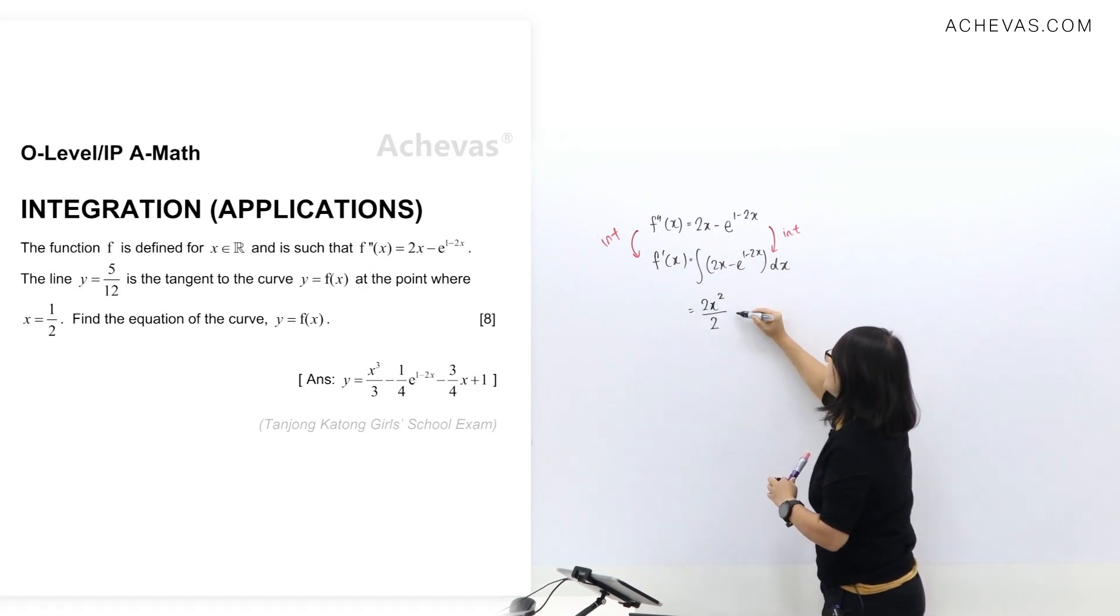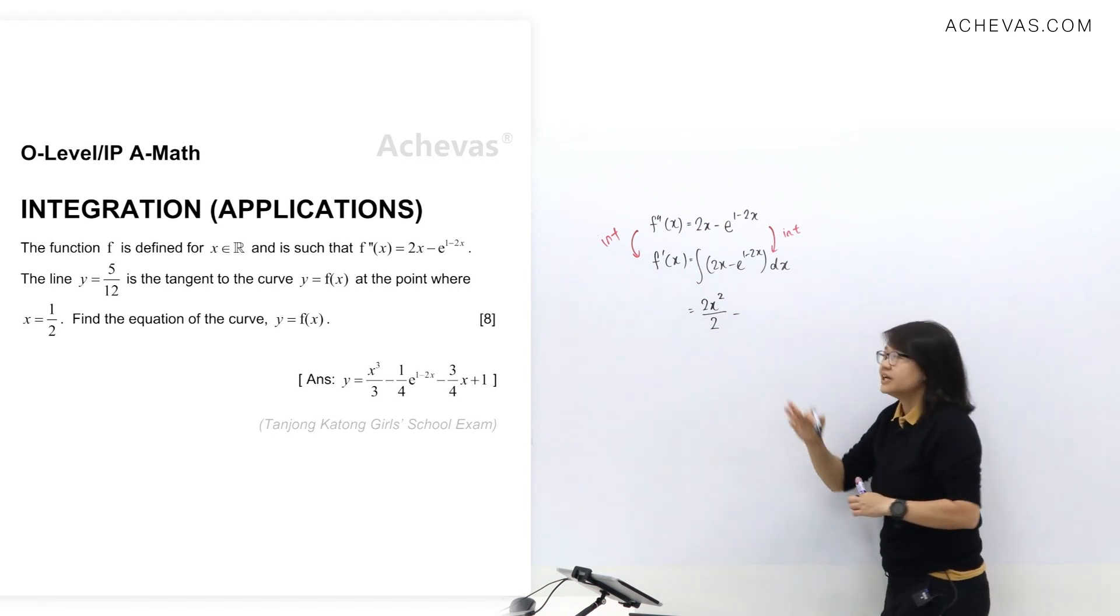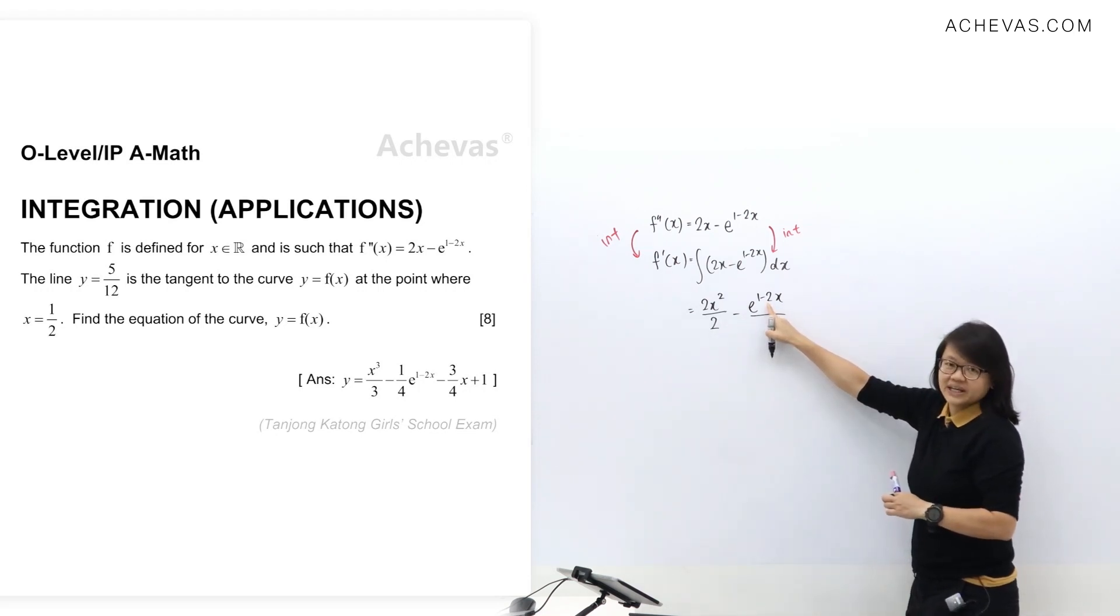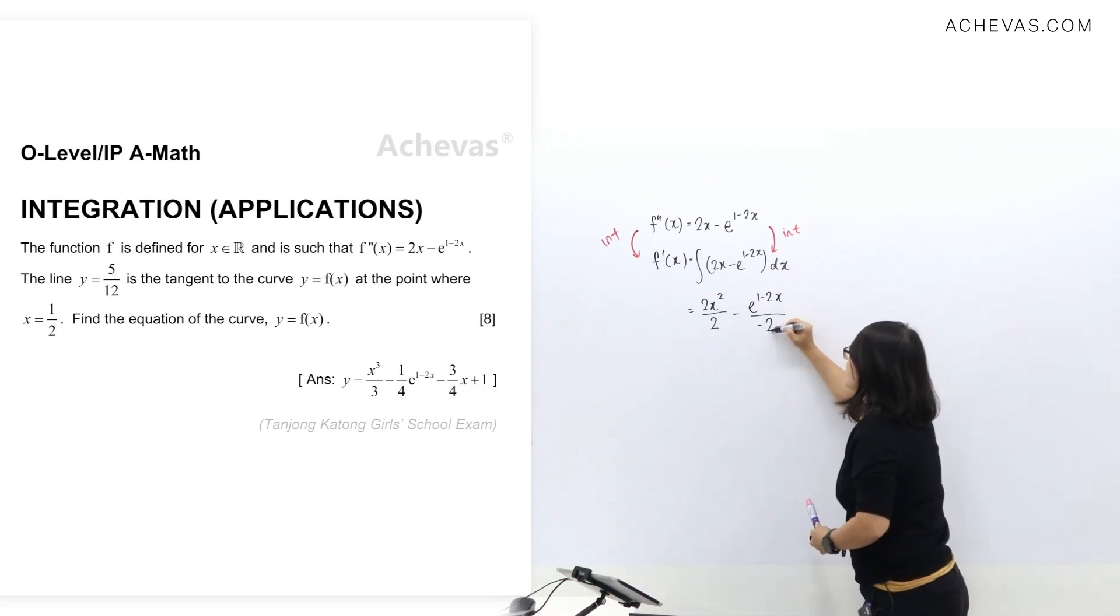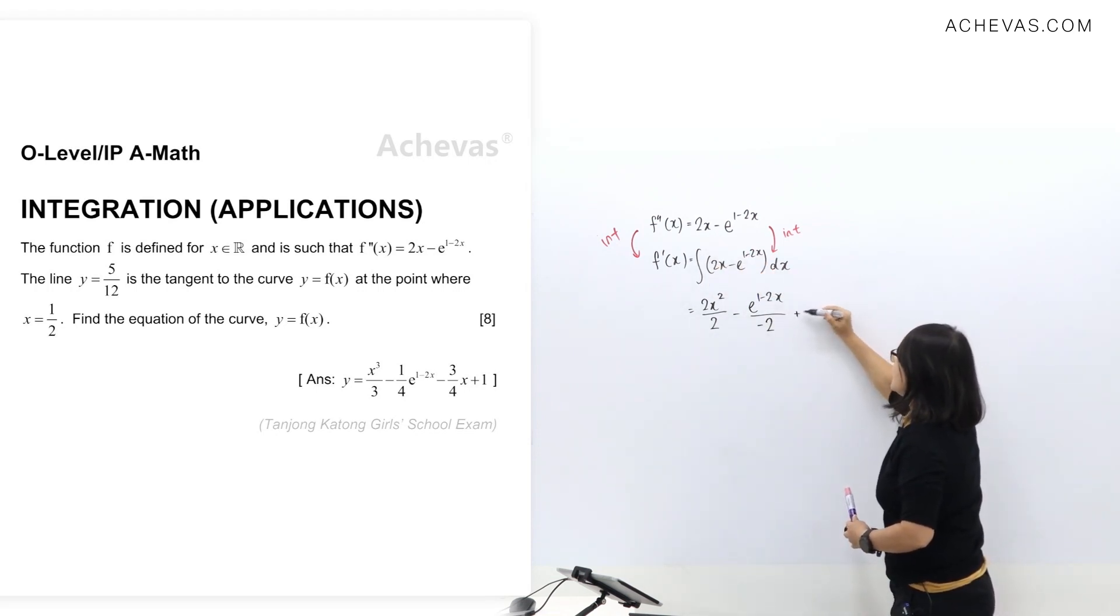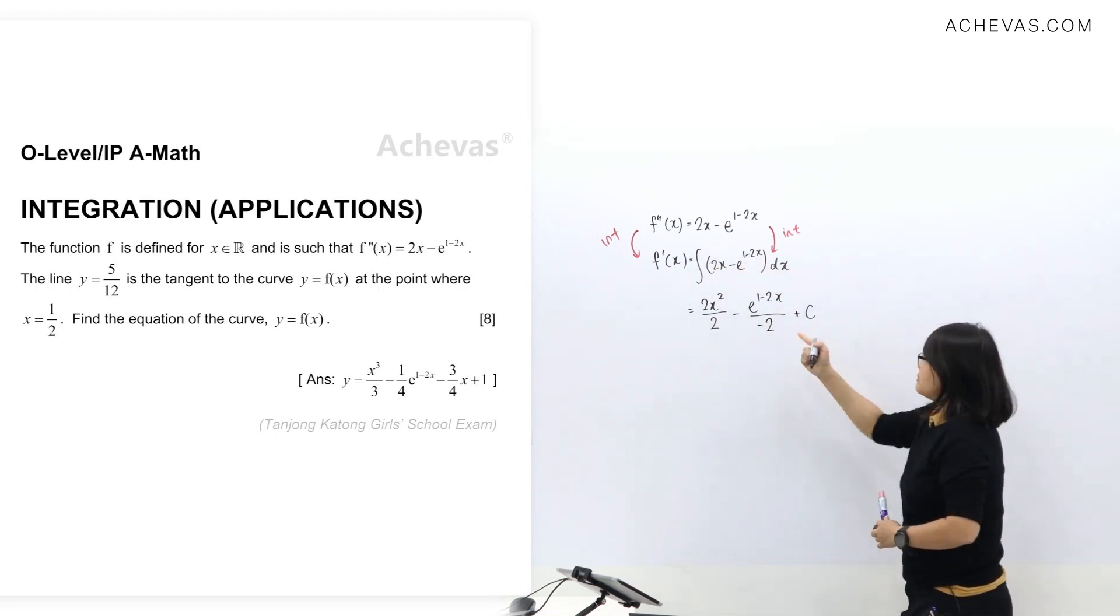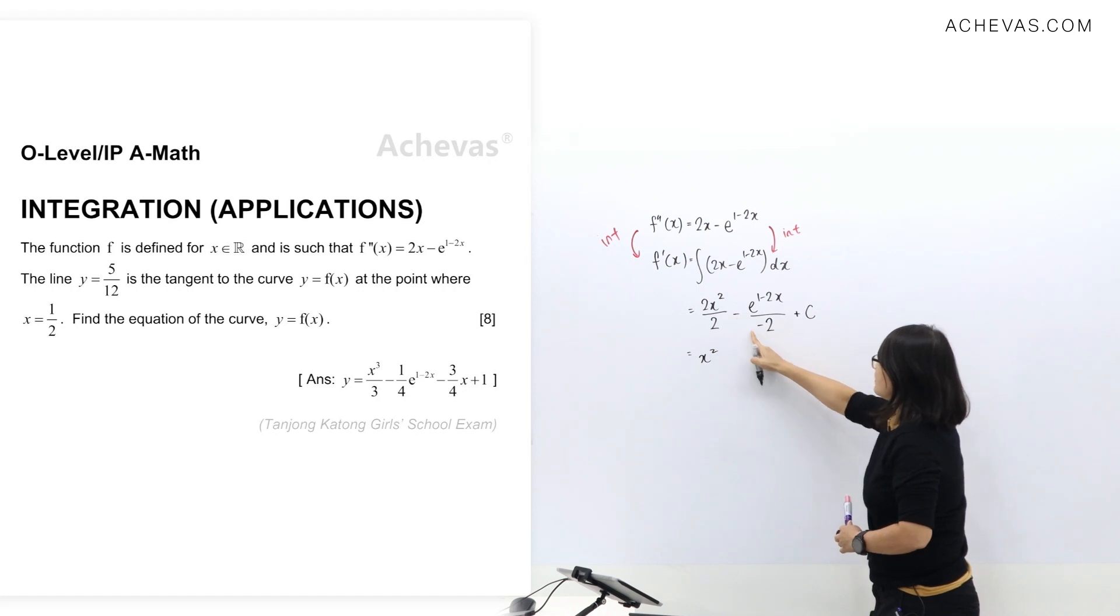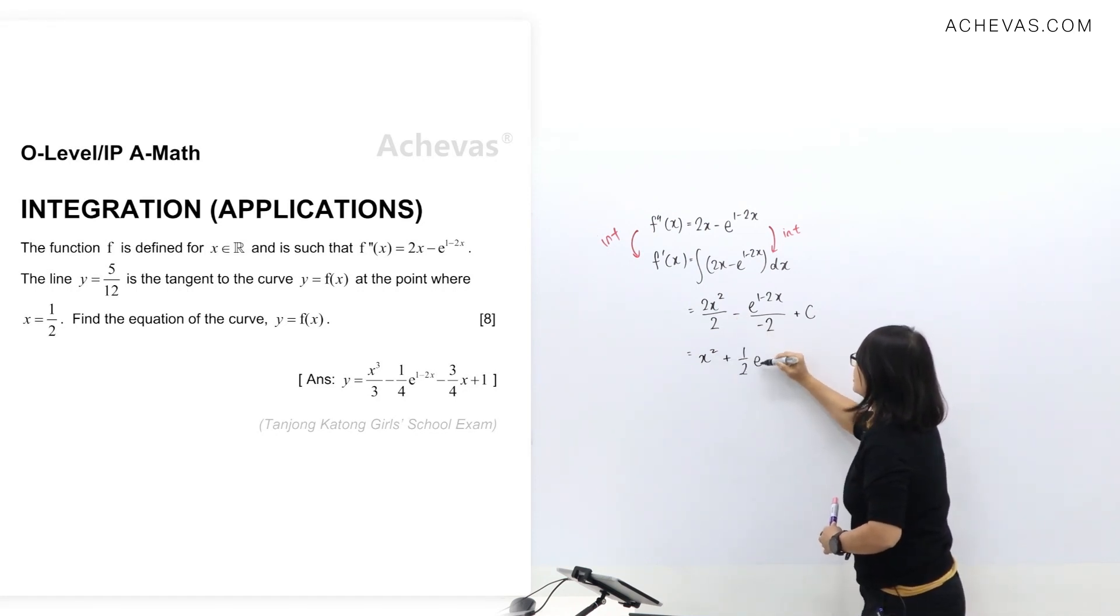Let's do a simple integration of 2x. Raise the power, power 2 divided by the power which is 2. Integration of exponent: copy the entire expression, divide by coefficient of x squared, in this case is negative 2. And remember there's no limit here. Simplify: 2 divided by 2 is gone. Let me write down x squared. Negative negative so it's positive. I write the half here and continue writing e^(1-2x) plus c.